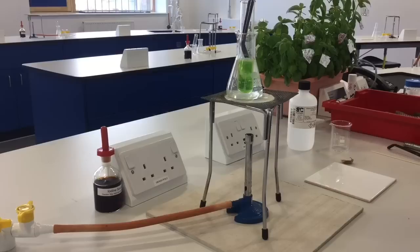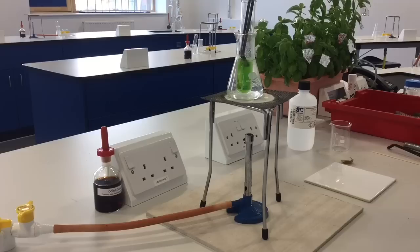About now our leaf should be well and truly decolorized. I've switched the Bunsen burner off—you don't need it anymore. It still boils without the Bunsen burner; the heat of the water is still above that 78 degrees needed to boil the ethanol.